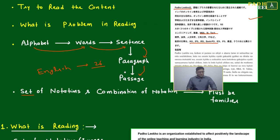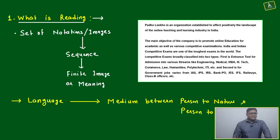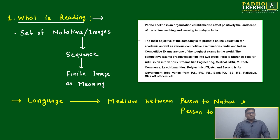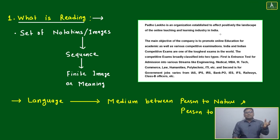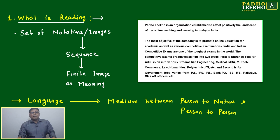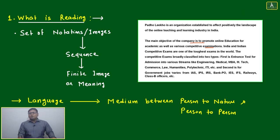How to read — we'll discuss that too. Now the same passage is presented in English. Now you are able to read it; your brain is able to make some images and accept it. What is written here: 'For Only Case is an organization established to affect positively the landscape of the online teaching and learning industry in India.' You will be able to read the full content in the next one to two minutes.